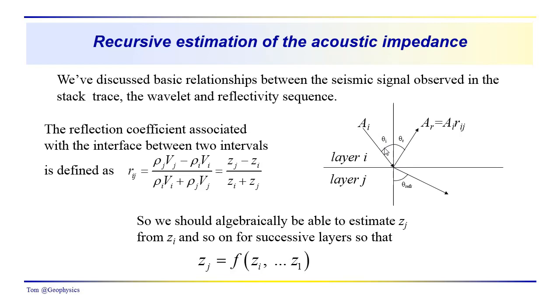Thinking in terms of the reflection coefficient, we can also think of the reflection coefficient between these two layers as the ratio of the amplitude of the reflected wave over that of the incident wave.